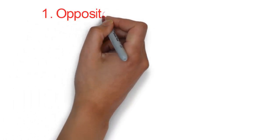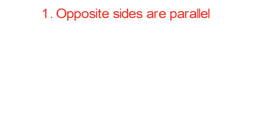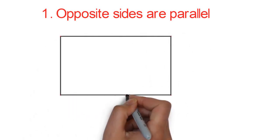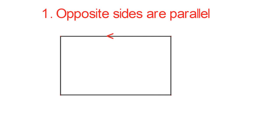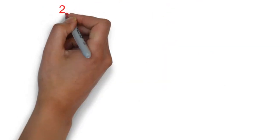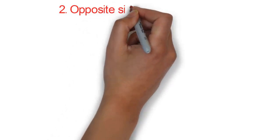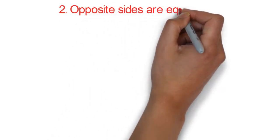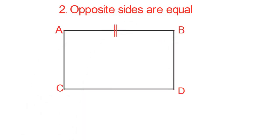Let's take a look at the properties one after the other. One: opposite sides are parallel. So this side is parallel to this side, and this side is also parallel to this side.